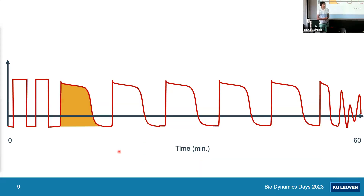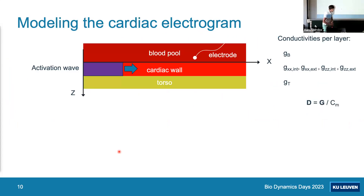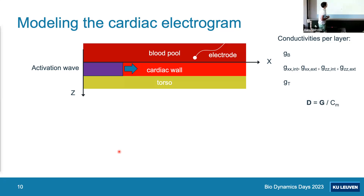The first message is that analytical solutions remain valuable even in the age of machine learning and simulations. A paper was published this week with an analytical solution. Doctors during surgery measure local electrical potentials inside the heart in the blood pool, and from these waveforms they want to derive information like wave travel direction and focal sources. Together with student Lore Lane, a three-layer geometry was constructed: torso, cardiac wall, and blood pool with an electrode, using a slab geometry where the top and bottom layers extend to infinity.